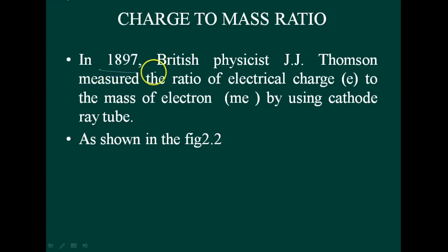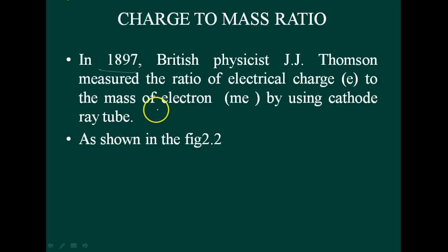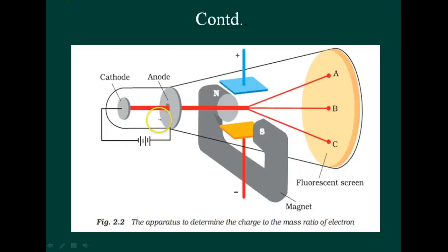In 1897, British physicist J.J. Thomson measured the ratio of electrical charge e to the mass of the electron mₑ by using the cathode ray tube, as shown in this figure.